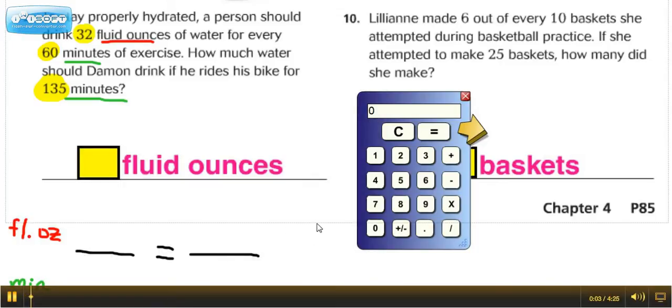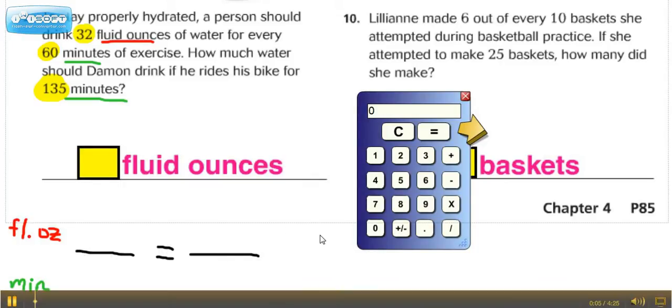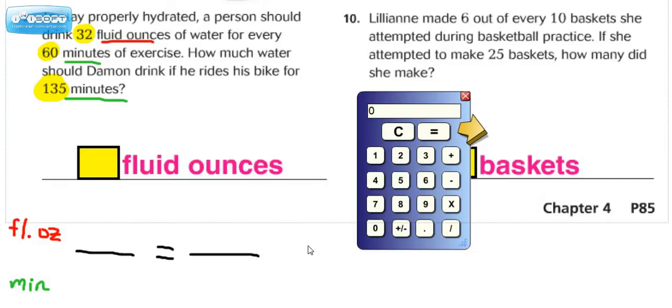Hey everybody, it's Ms. Dietrich helping you on proportional reasoning. Number 9 reads: to stay properly hydrated, a person should drink 32 fluid ounces of water for every 60 minutes of exercise. How much water should Damon drink if he rides his bike for 135 minutes?